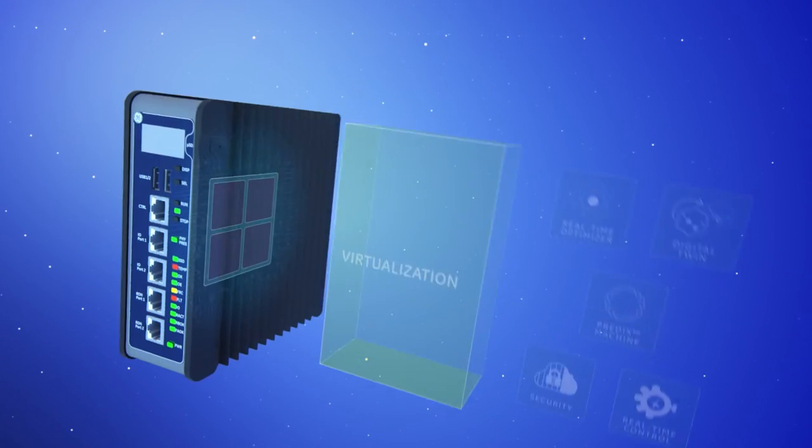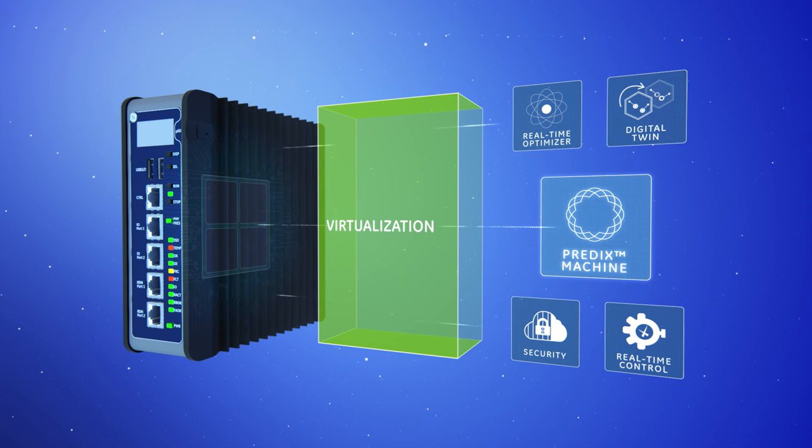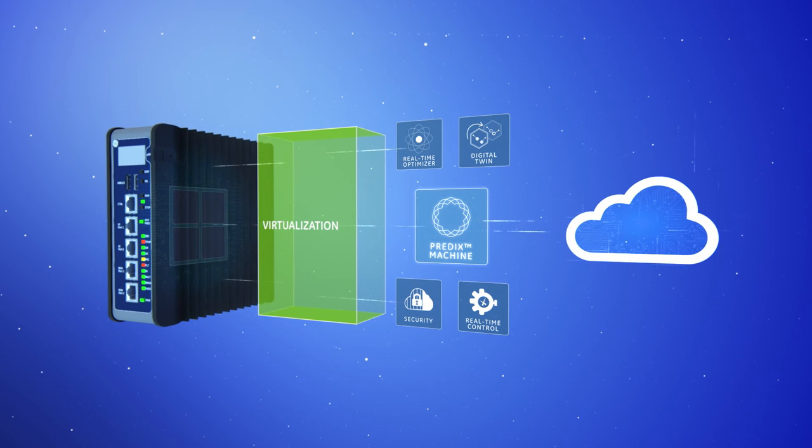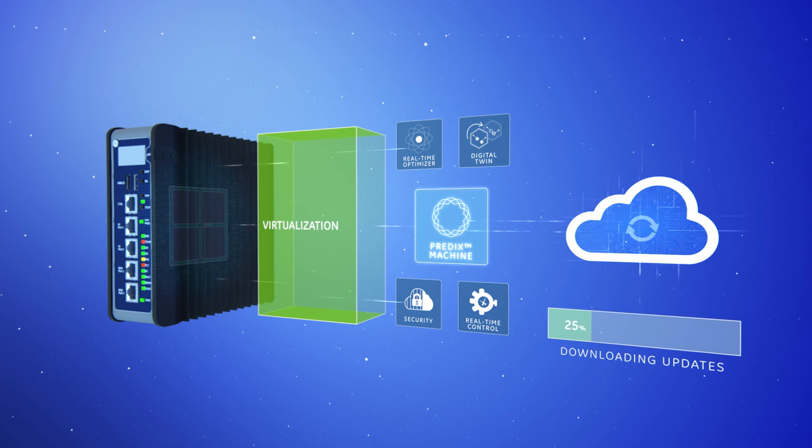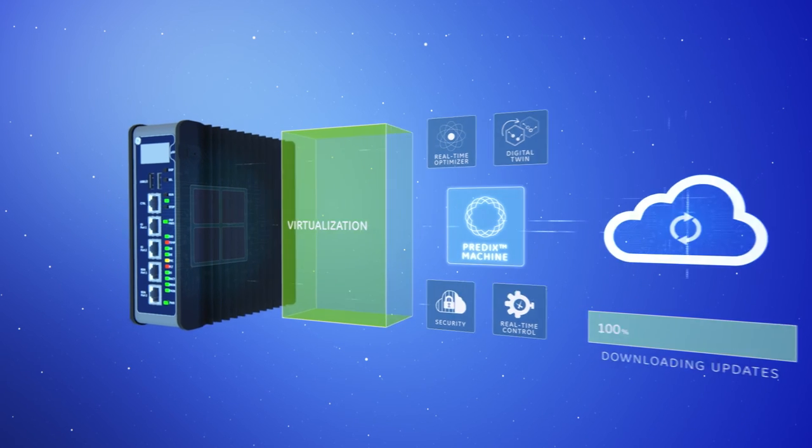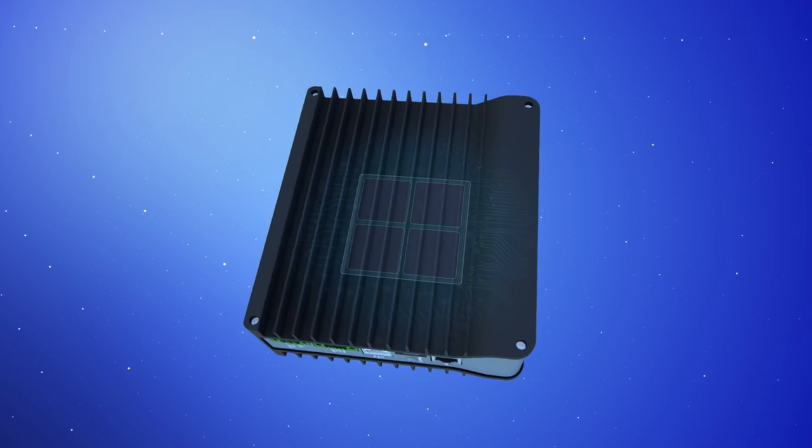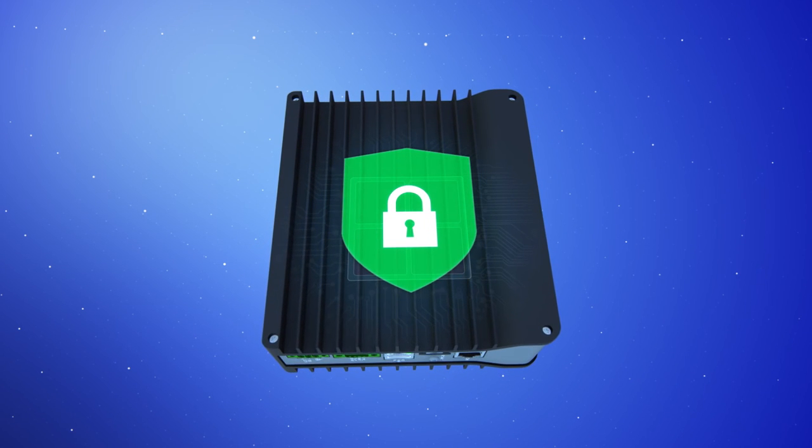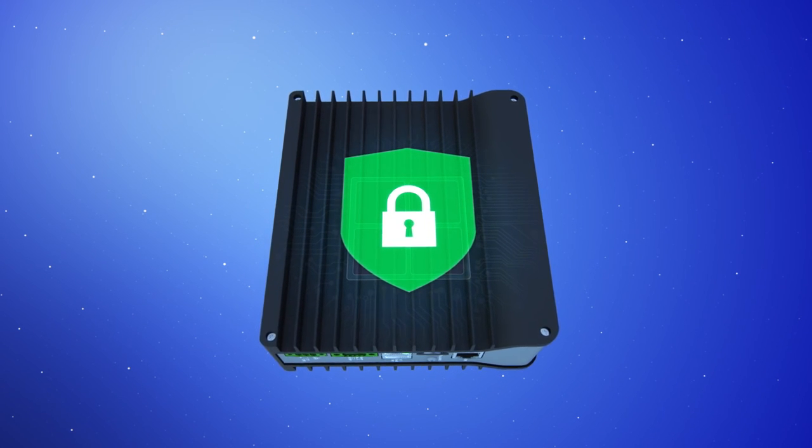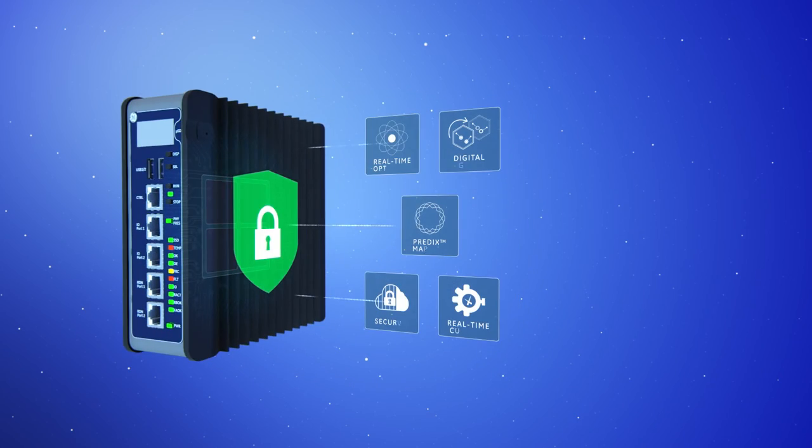The IICS integrates Predix technology to connect us to the Industrial Internet, where we can get real-time market data and predictions. The connectivity also lets us update our controls remotely and even do it on the fly with the machine running. A control system this advanced might seem like a tempting target for hackers, but we've developed multiple layers of cybersecurity, starting down at the hardware layer and up through the cloud.